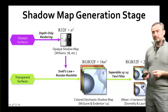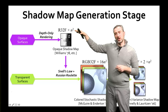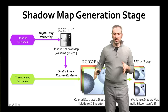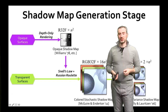Here's an overview of our method. First, we generate shadow maps. Opaque surfaces go through a regular shadow map production pass at regular resolution, and then we route the transparent surfaces through a stochastic shadow map pass. This is essentially McGuire and Enderton's colored stochastic shadow map algorithm.